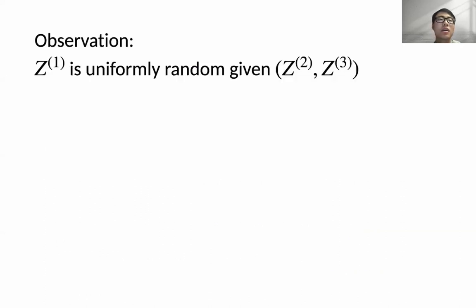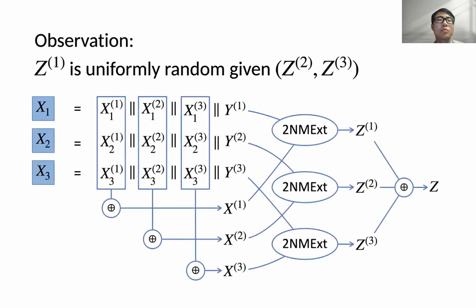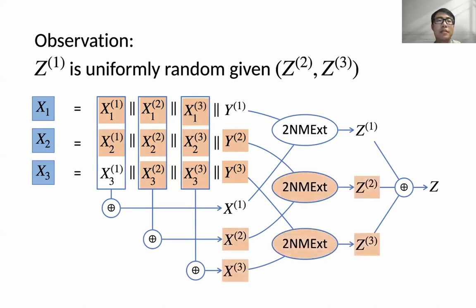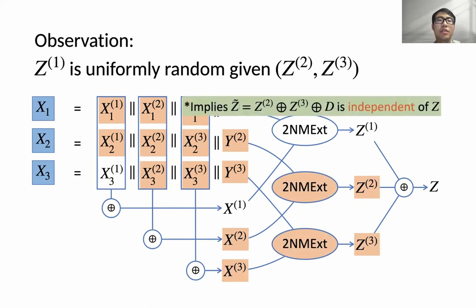To see why, one key observation is that Z1 is uniformly random given Z2 and Z3. To prove this, we fix all input sources except Y1 and X_{31}. Then X3 and X2 are also fixed, meaning Z2 and Z3 are fixed. Since Y1 and X_{31} can still have some randomness and they are independent, by the security of the underlying two-source non-malleable extractor, Z1 is close to uniform given Z2 and Z3. Therefore, given Z2 and Z3, the tampered output Z-tilde is fixed, but Z is still close to uniform, implying Z-tilde is independent of Z.